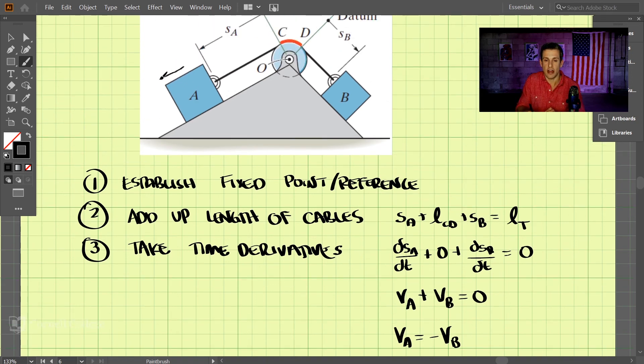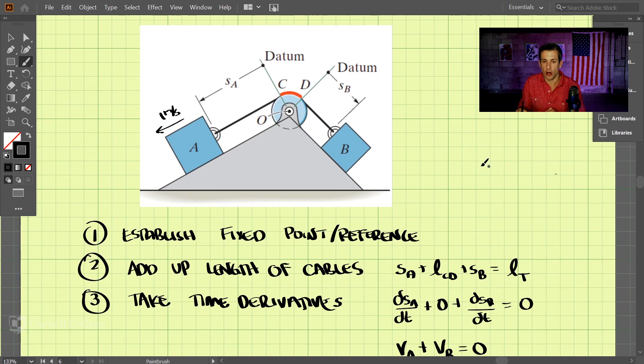If the velocity of A is one meter per second this direction, and we're calling away from our fixed point as positive, that means VB is equal to negative one meter per second, which means it's getting closer to our fixed reference here. So it's opposite of the arrow how we've drawn SB here.